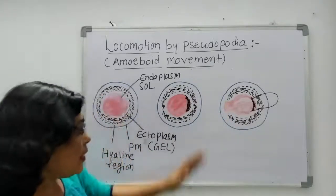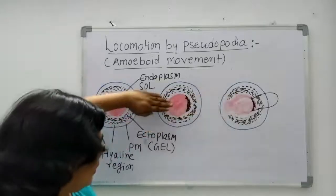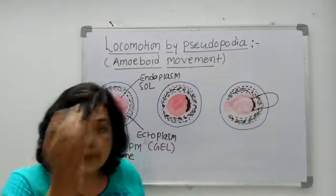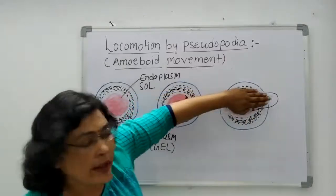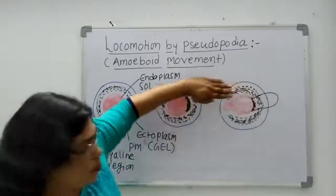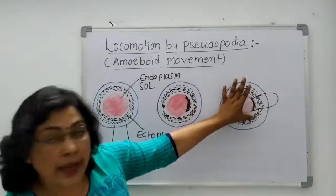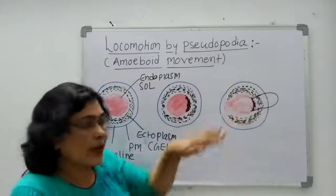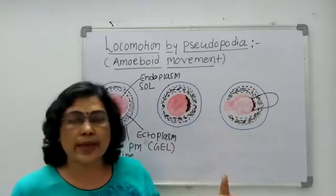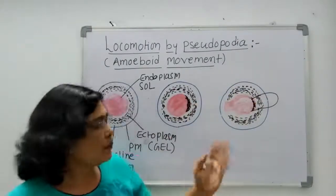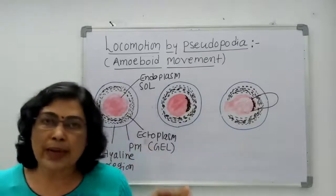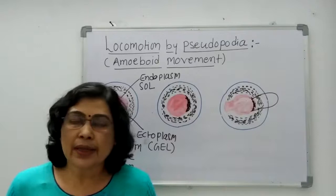Aur iske karan yeh hota hai ki yeh jo sol hai, yeh aage ki taraf badhta hai. Aage ki taraf badhne ke karan wahan pe ek protrusion taiyar hoga, ek development taiyar hoga, aur us development mein yeh jo sol hai woh force kiya jaayega. Uus wajah se yahan pe ek gel tube taiyar hota hai, aur us gel tube mein yeh sol ghusne ke karan — yahan pe contraction bhi hoti hai — aur contraction ke karan aur force se yeh jo sol hai, yeh andar ghusta hai. And there is development of a pseudopodia. Pseudopodia taiyar hogaya, toh locomotion ka step taiyar. Aur agla hissa jo rahega, badhne wala, usse immediately gel kiya jaayega. Aur yeh cheez kabhi bhoolna nahi hai ki amoeba ki jo plasma membrane hai, woh highly elastic hoti hai — breaking ka koi sawaal hi nahi aata.